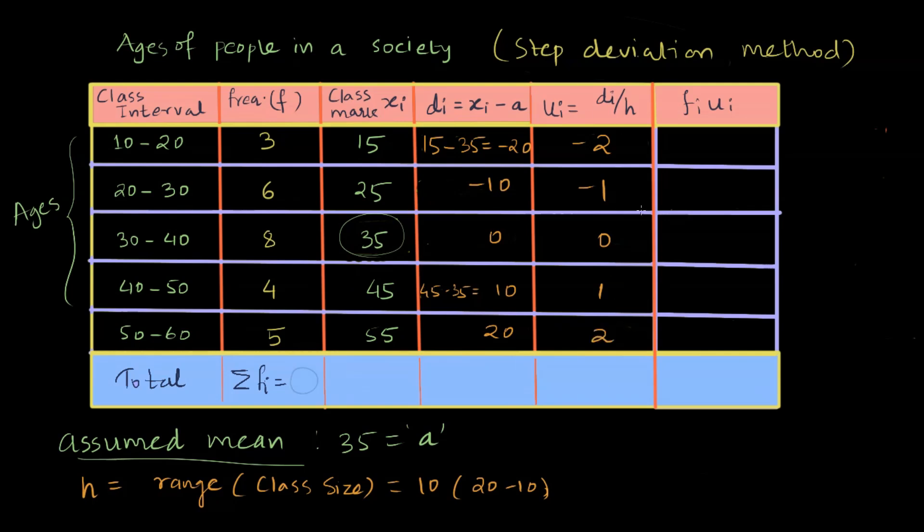Now we can see that the values are reduced and it just gets easier to find out the multiplication and get the mean. fiui for the first row is frequency times the corresponding step deviation. So 3 times minus 2, which is minus 6, and 6 times minus 1, which is minus 6 again. 8 times 0 is 0, then 4 times 1 gives me 4, and 5 times 2 for the last row gives me 10.